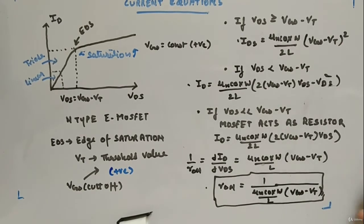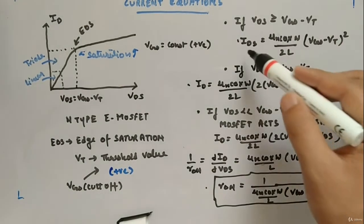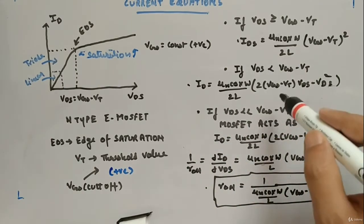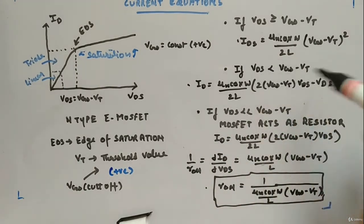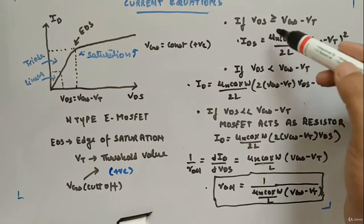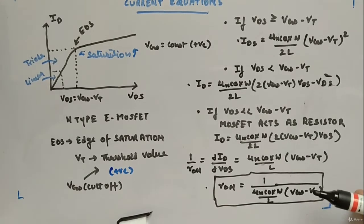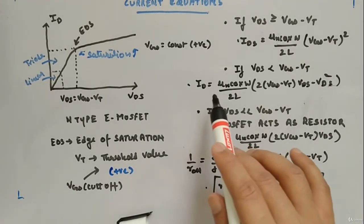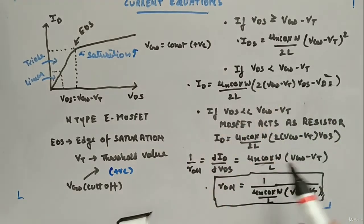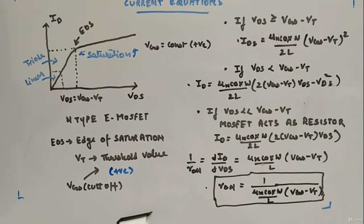The proofs for why each equation is valid in its respective region — why saturation applies when Vds ≥ Vgs − Vt and triode when Vds < Vgs − Vt — are skipped here. What matters most is knowing when to use each equation. Next, we'll look at p-type enhancement MOSFETs and depletion MOSFETs to see the corresponding changes in current and voltage.